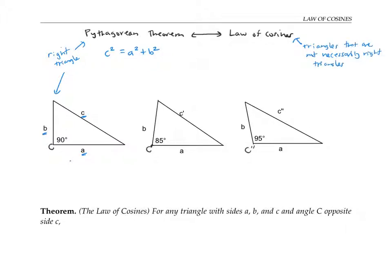Loosely speaking, the law of cosines says that c squared is equal to a squared plus b squared plus a correction factor, where the correction factor depends on the size of the angle that's opposite to side c.